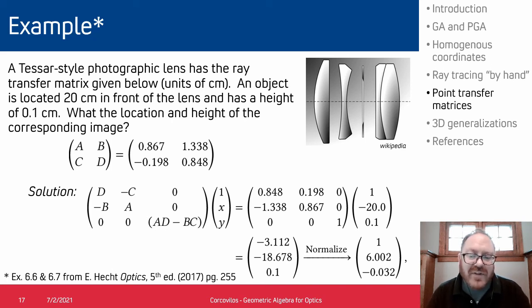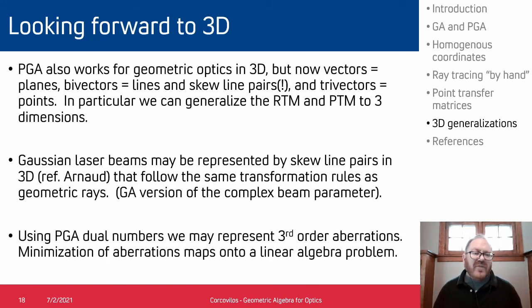So we can look forward to 3D. This works in 3D but now vectors equal planes, bivectors equal lines and skew line pairs—which is a new thing—and then trivectors represent points. So these ideas of the ray transfer matrix and point transfer matrix also work in 3D.